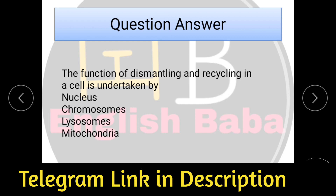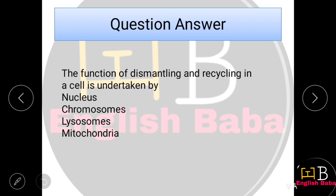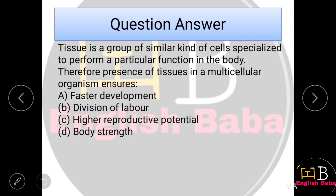The function of dismantling and recycling in a cell is undertaken by lysosomes. A tissue is a group of similar kinds of cells specialized to perform a particular function in the body. The presence of tissues in a multicellular organism ensures division of labor — Option B is correct. Everyone knows their specific work, which is why tissues are important.